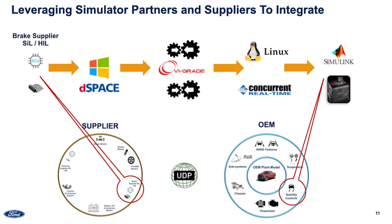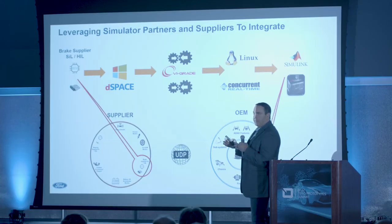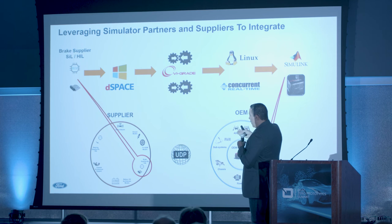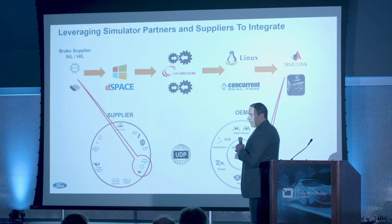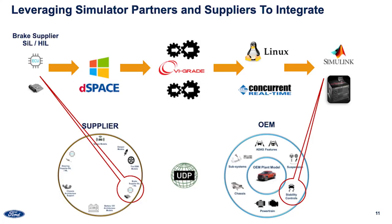As a quick example: let's say you're working with a brake supplier and they have a certain ECU and a certain HIL. They're working in a Windows environment; their libraries are Windows-based for software-in-the-loop. They may have their HILs integrated on a dSPACE rig — so some of that's not exactly plug and play. VI Grade can work with them to help take some of the workload off of you, create a conduit to bring it into a Concurrent Linux environment, get the libraries correct, and help with the Simulink model. It gives you a chance to actually do your work versus spending time to make things work.